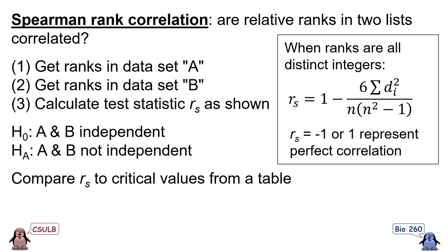An R_s of 1 is perfect correlation, where the same individual is first in both datasets, second in both datasets, etc. An R_s of negative 1 is perfect negative correlation, where the individual who is first in dataset A is last in dataset B. Determining whether values of R_s are significantly different from zero can be done by comparing them to critical values from a table. The null hypothesis is that the ranks in datasets A and B are independent of one another, and the alternative hypothesis is that they are not independent.